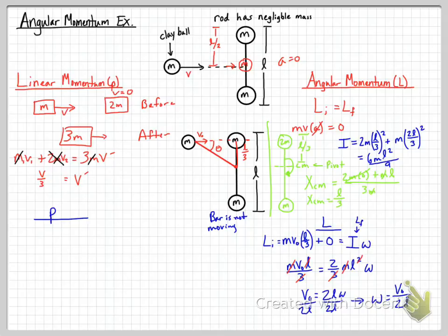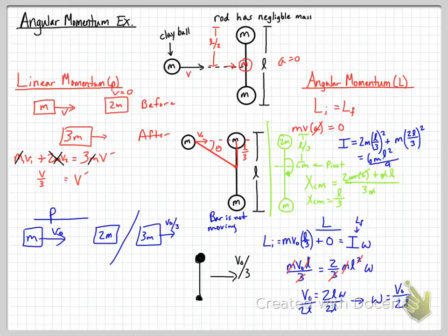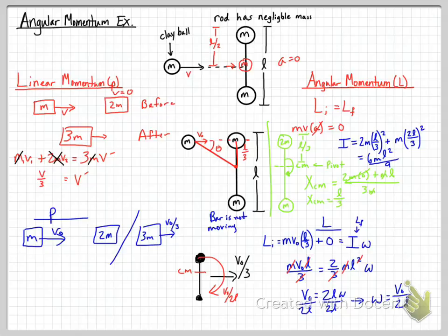Now for linear momentum in this second scenario: mass m with velocity v₀ hits stationary mass 2m in a completely inelastic collision, giving a combined velocity of v₀/3. So after the collision, the barbell with the clay ball attached has two simultaneous motions: it translates linearly at v₀/3 in the original direction of travel, and it also rotates about its center of mass — located l/3 from the hit end — at angular velocity ω = v₀/2l.